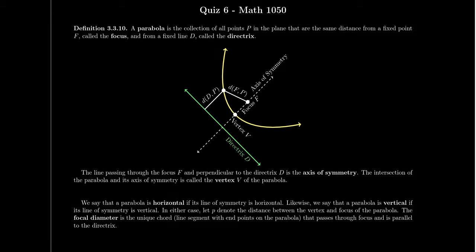Previously in this lecture series we've learned about quadratic functions and graphs of quadratic functions, which we often called parabolas. Now long before the invention of algebra, mathematicians have been studying parabolas. To the ancient geometers, a parabola was considered a collection of all points in the plane that are the same distance from some fixed point F, which we call the focus of the parabola, and some fixed line D, which we call the directrix of the parabola.